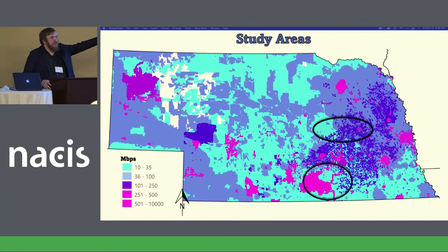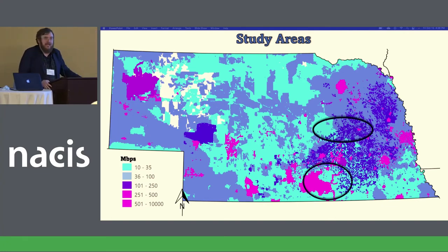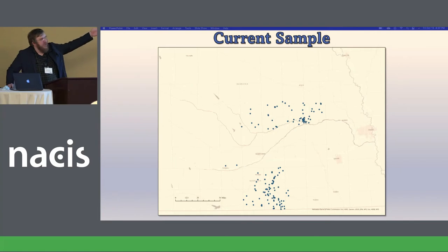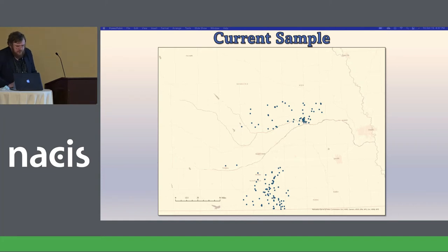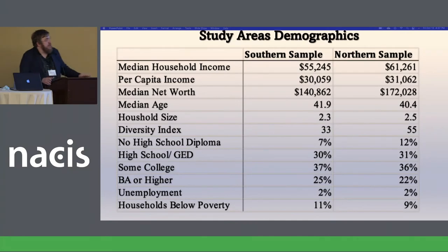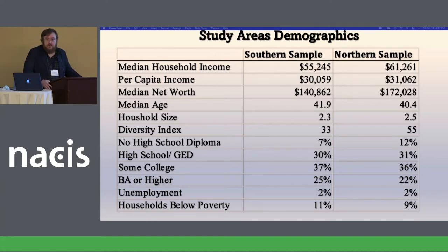These are the two study areas. Because of the way the electric utility sent devices out, they created two pretty distinct study areas — it became a natural experiment. The southern area has fiber. There are approximately 200 to 250 devices. There are two outliers — Kearney and one other — that I took out because they were participants from our school and didn't really fit. The two study areas are demographically very close, but the northern sample is wealthier and a little more educated.